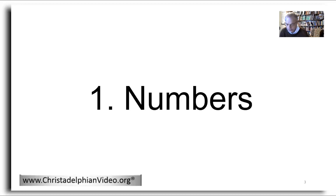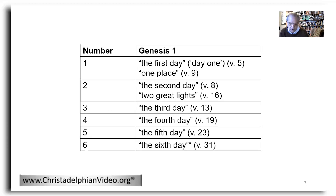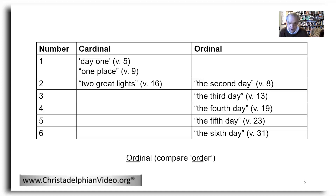First, let's consider numbers in Genesis 1. The numbers one through to six are all found in Genesis 1. Of these, the numbers one and two each occur twice. The numbers can be divided into two groups. There are three instances of cardinal numbers, that is numbers which tell how many there are of a certain thing. The second type of numbers are ordinal, that is they indicate the order of a given thing. There are five of these. Before looking at these specific numbers in Genesis 1, it is worth reflecting generally on numbers and mathematics with regard to God.